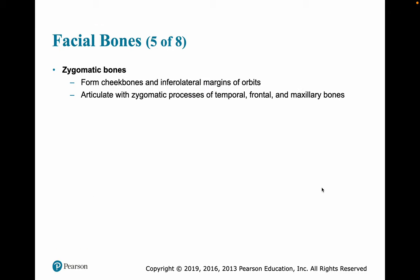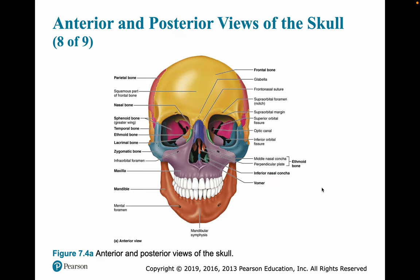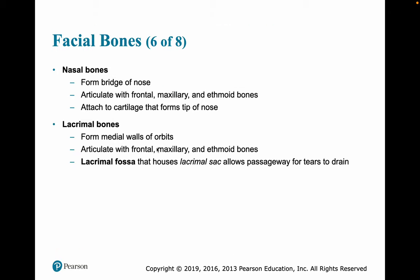The zygomatic bones form the cheeks and the inferior lateral margins of the orbits. The zygomatic bone articulates with the zygomatic process of the temporal, frontal, and maxillary bones. The nasal bones form the bridge of the nose; they articulate with the frontal, maxillary, and ethmoid bones and attach to the cartilage that forms the tip of the nose. The lacrimal bones form the medial walls of the orbits. They articulate with the frontal, maxillary, and ethmoid bones and contain the lacrimal fossa, where lacrimal sacs are found — where tears are produced and the passageways for those tears to drain.